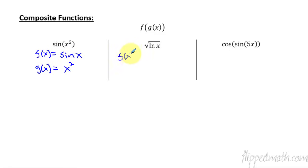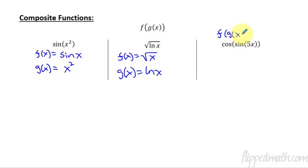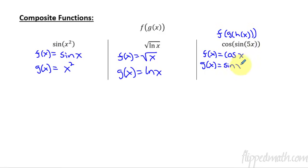For our next one, the outside function — we always want to recognize the outside one first when we do these derivatives — is just the square root of x, and then the inside function is what we're plugging into that, which is a natural log of x. Here's an example with three different layers, f of g of h of x. The outside function is the cosine, so cosine of x. What are we plugging into that x? The inside of that is sine of x, and then inside of that what we're plugging in is just 5x. So there are our layers.